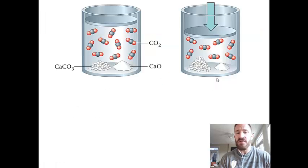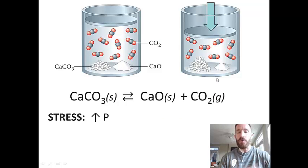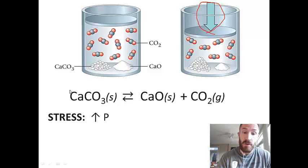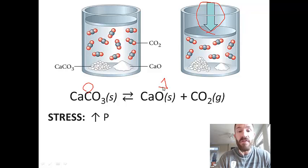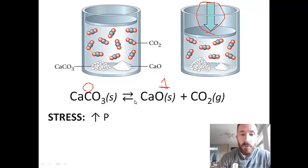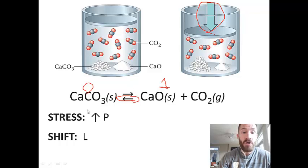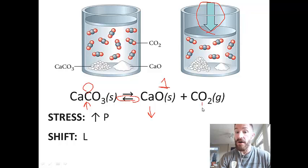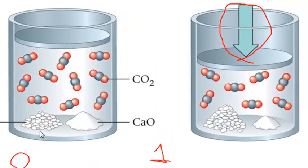For the same CaCO₃ reaction but with an increase in pressure: increase in pressure favors the smaller number of moles. We have zero moles of reactant gas and one mole of product gas, so the smaller number is zero — the reaction shifts left. When it shifts left, more CaCO₃ is produced, CaO is used up, and there is less CO₂ gas. You can see this in the illustration: the amount of CaCO₃ has increased, CaO has decreased, and the number of CO₂ particles has gone down.